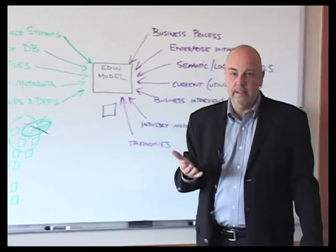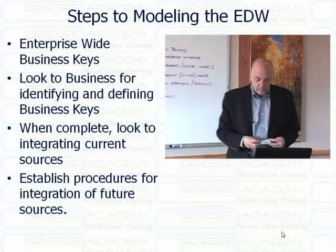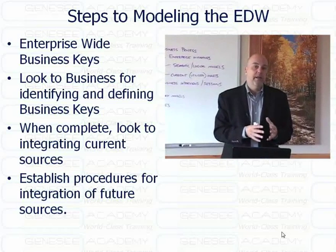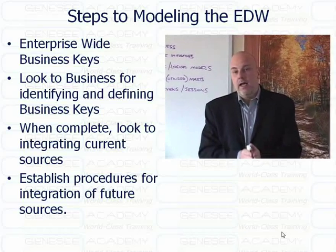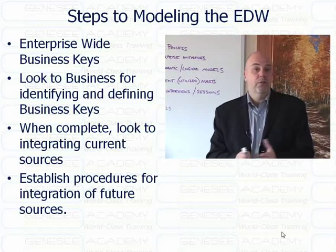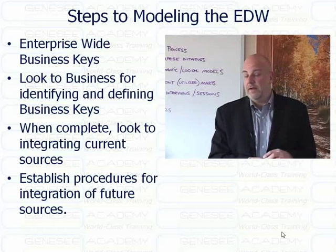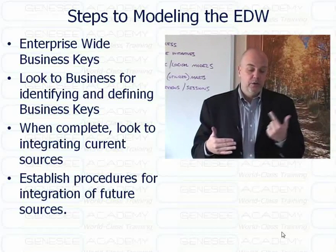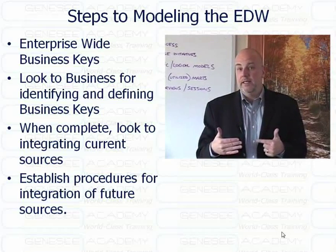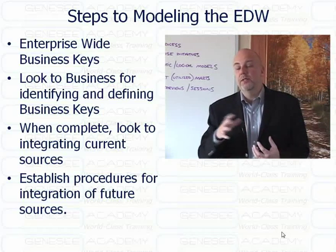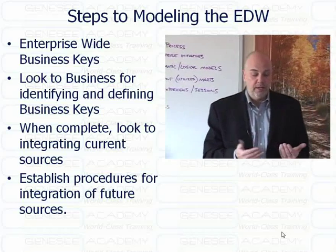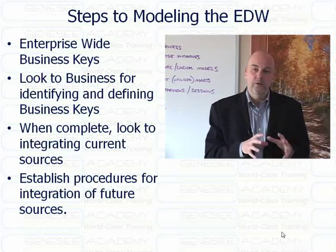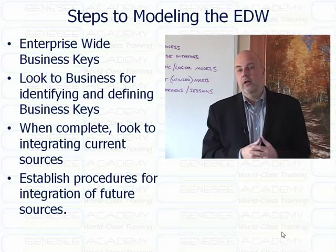I'm data-centric myself, so I'm certainly going to want to see what's in the source systems as well, because in the end I am going to have to pull data from there. But we need to keep in mind that we're not building a 'person' hub as a core business key when what we really wanted was 'customer' based on everything the business told us. So we should be looking more to the right. When modeling these things, we want to keep in mind that we are focused on enterprise-wide business keys. The enterprise-wide business keys are typically not going to be one-to-one with any given source system — that's just a given fact of the way things are today.